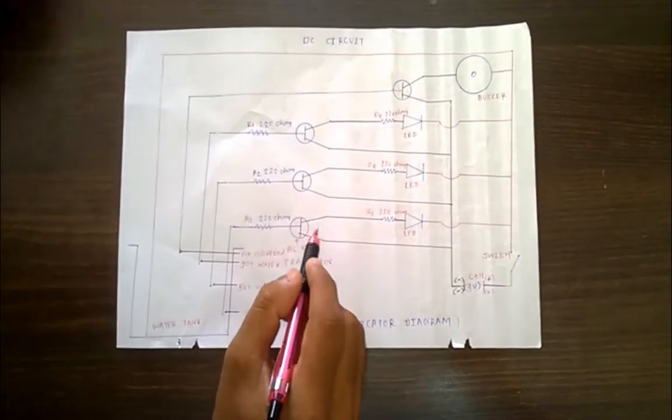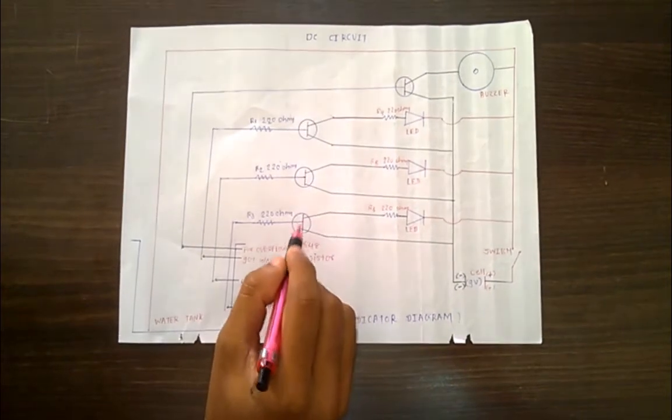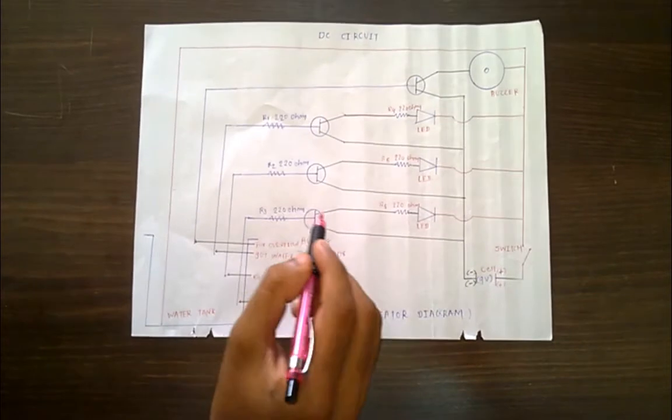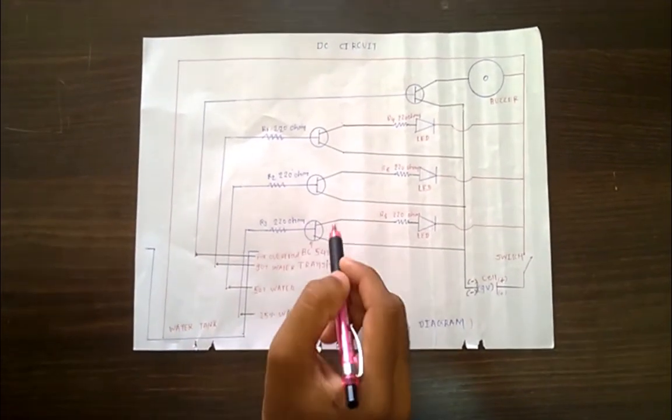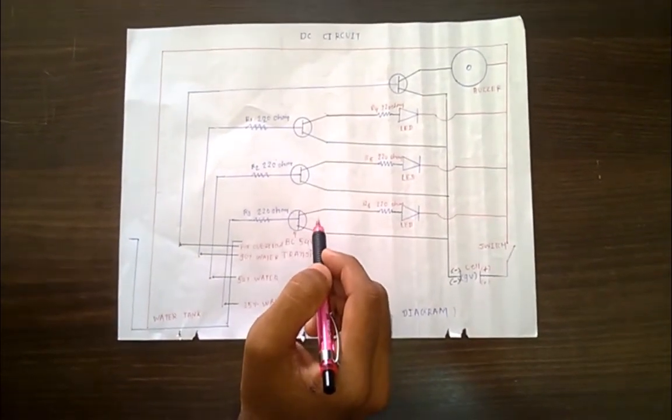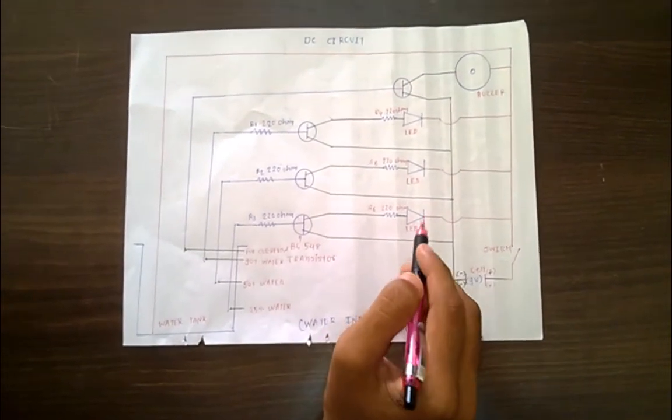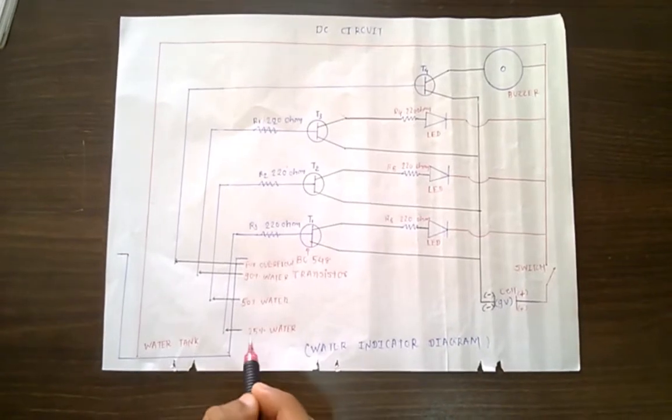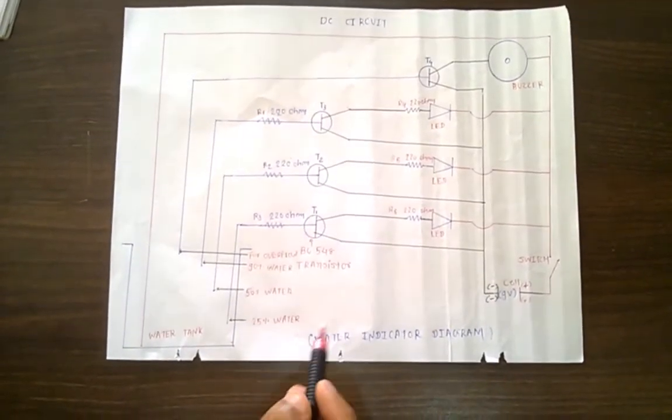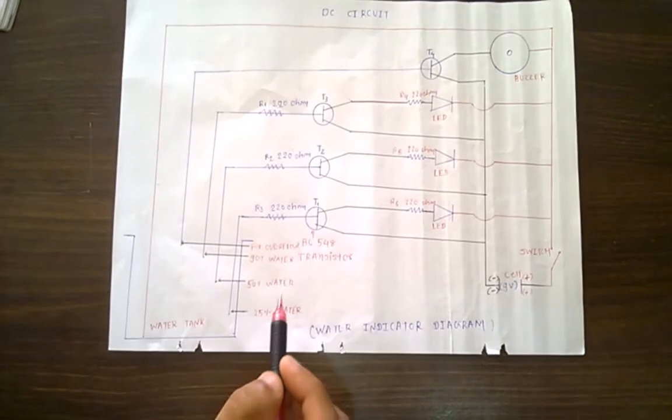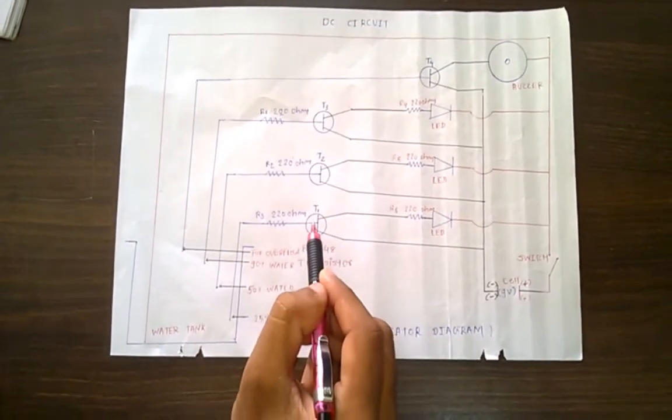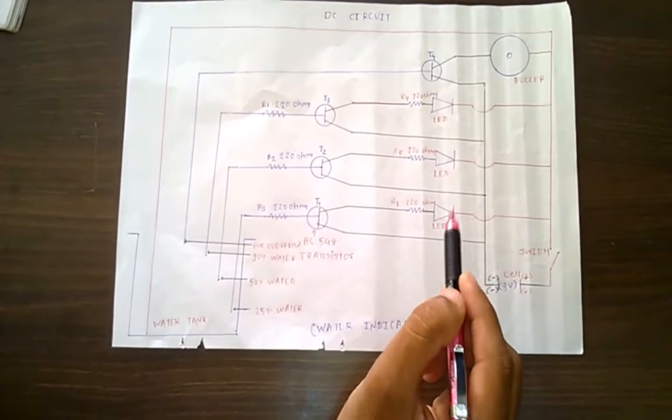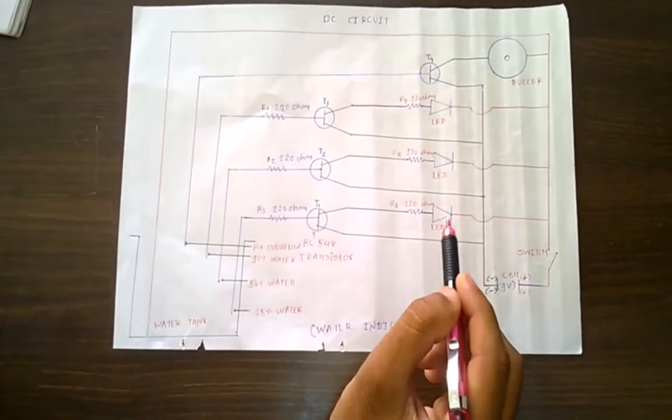In the transistor, the base wire is connected to water tank, and the collector is connected to resistance and LED. When the water tank is filled up to 25%, a closed path is created. Due to closed path, T1 transistor is on and green LED is activated.